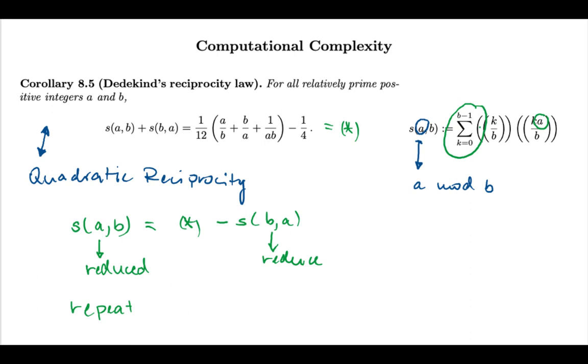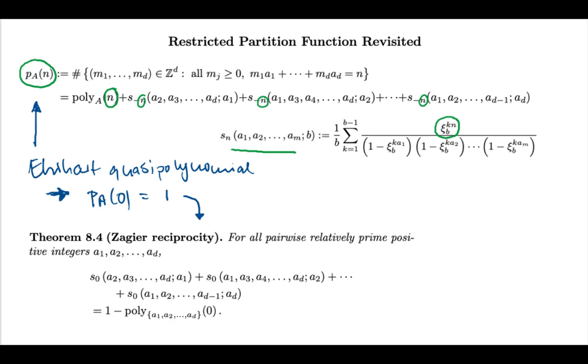I should remark here that this is special in the sense that for this argument to work, we need a reciprocity law with just two terms. So it's important for my complexity argument over here that I only have two terms. If you think about applying the same kind of complexity argument to the Zagier reciprocity theorem that we proved earlier, for general d, the situation is much more complicated.